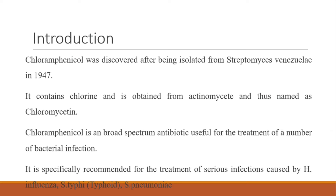Chloramphenicol was discovered after being isolated from Streptomyces venezuelae in 1947. It contains chlorine and is obtained from actinomycetes, and thus is also named chloromycetin — because it contains chlorine in its structure and is derived from actinomycetes.